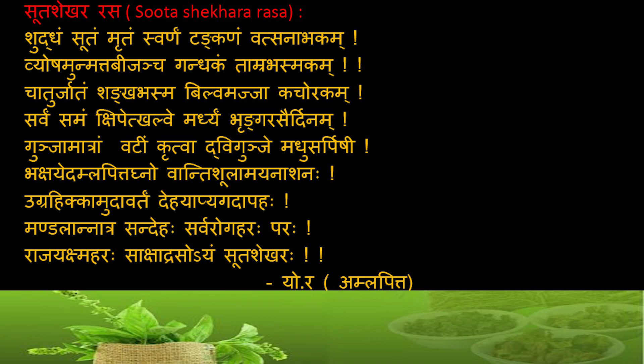The reference is from the Yoga Ratnakara, where it explains: 'shuddham sutham rutam swarnam tankanam vatsanabakam, vyosham unmatthabijanchagandakam tamra basmakam, chaturjhatham shankabasmam bilvamajja kachorakam, sarvam sapam samam kshipet kalve madhyay brungarasair dhinam, gunja matram vatim krutva dvigunje madhusarpishihi bakshed amlapittagno vanti shula amayanashanaha ugrahikha mudhavartam deha yapyagada apaha mandala natrasandeha sarvaroga hara paraha rajayakshma hara sakshat raso ayam suta shekharaha.' This is the reference of suta shekhar rasa from the Yoga Ratnakara amlapitta adhikara.